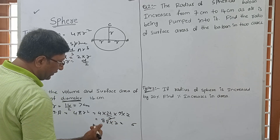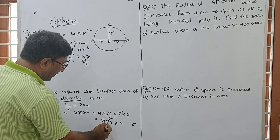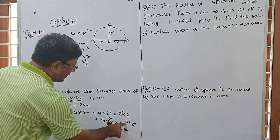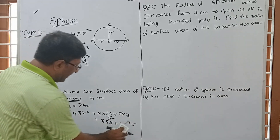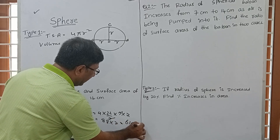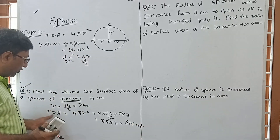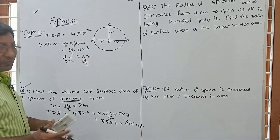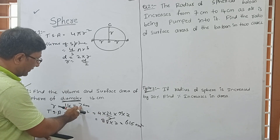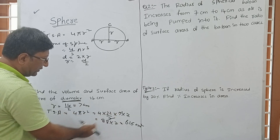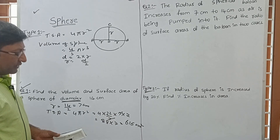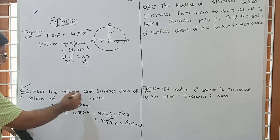For total surface area of Sphere: 4πr² = 4 × (22/7) × 7 × 7. The 7 cancels out, so we get 4 × 22 = 88, and 88 × 7 = 616. So the total surface area is 616 cm². This is our correct answer.